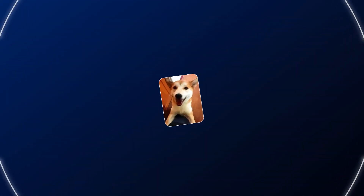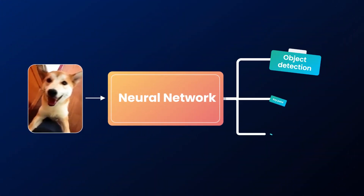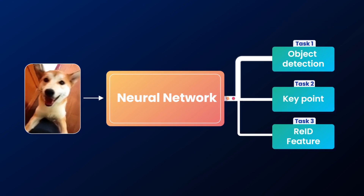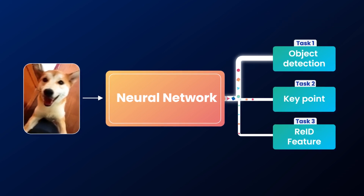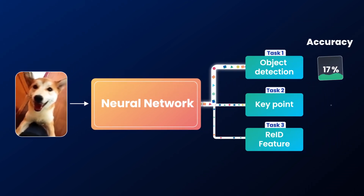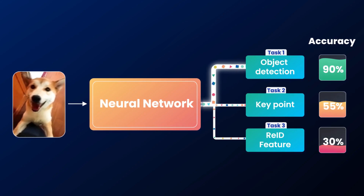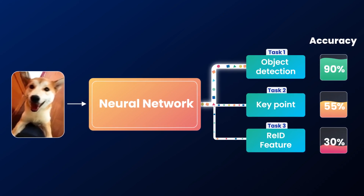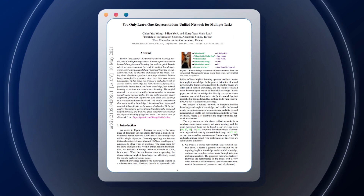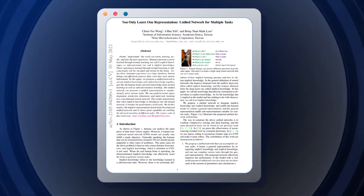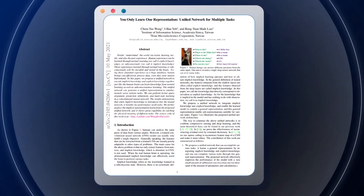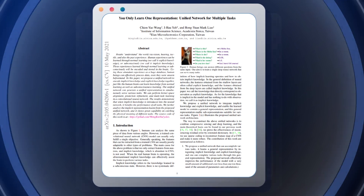When training a single model that can solve multiple tasks — that is, joint optimization — each task often pulls the weights in the direction suitable to itself, which causes the final overall performance to be worse than training multiple models individually. This is the motivation behind the development of YOLO-R: to create a unified network capable of learning general feature representations.